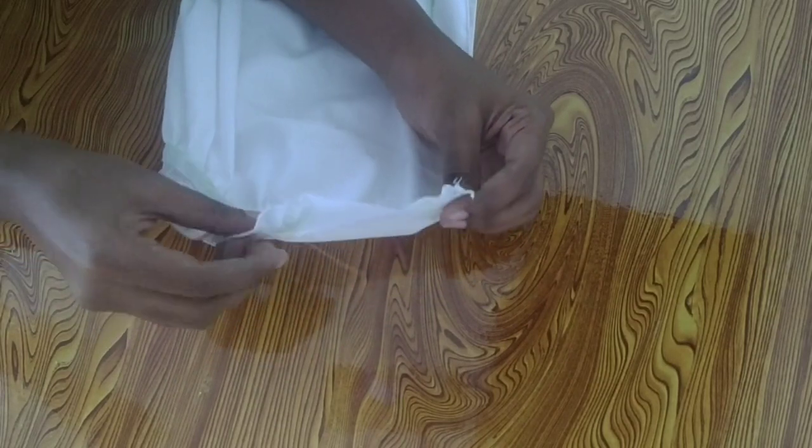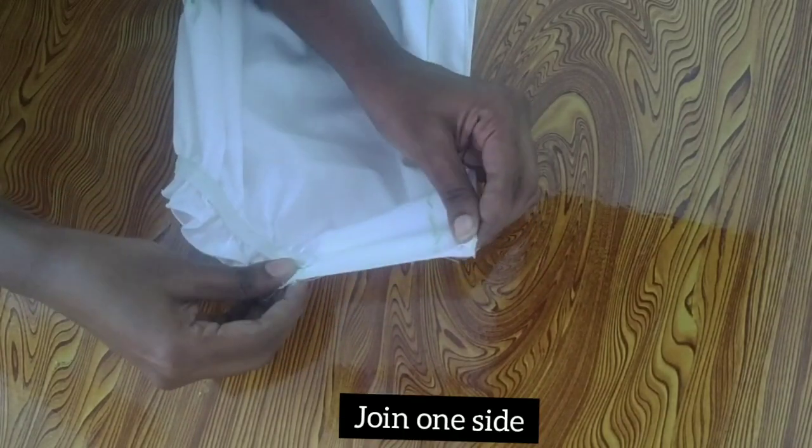Now, we stitch on one side. Stitch after the hip part, we attach it to the elastic part.